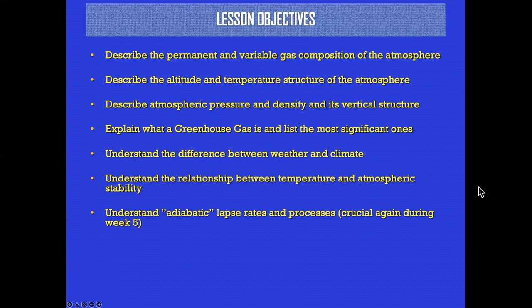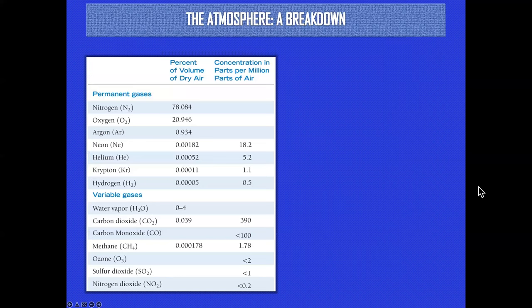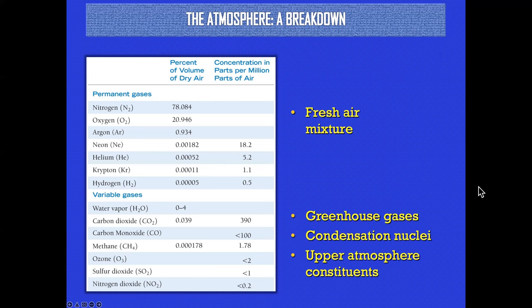The atmosphere is a thin envelope around the surface of the planet composed primarily of oxygen and nitrogen — way more nitrogen than oxygen — and also some other gases like CO₂ and water vapor, which are key greenhouse gases. Notice 78% by volume is nitrogen, 21% oxygen, and all other components are much smaller. Every time you breathe in you take in a little neon, argon, helium, krypton, hydrogen, water vapor, and CO₂.